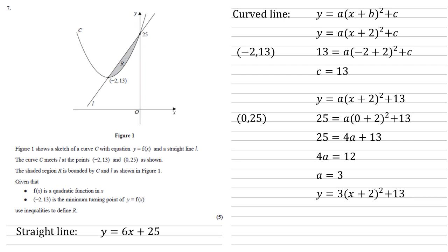Looking at our region R, we can see it is below the straight line. So it's smaller than that, and it's above the curved line, hence larger than that. So we have that 3 lots of x plus 2 squared plus 13 is smaller than y, which is smaller than 6x plus 25. Note that I've used strict inequalities here. You can use smaller than or equal to if you like, as long as both inequality signs are the same as each other.